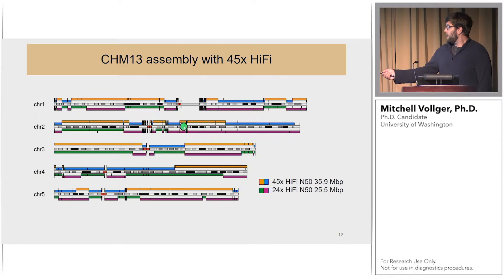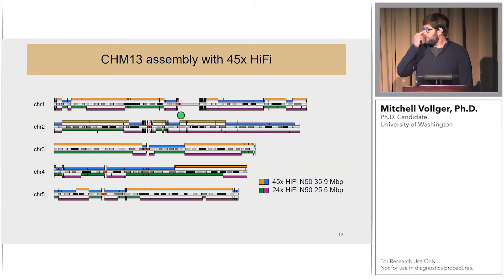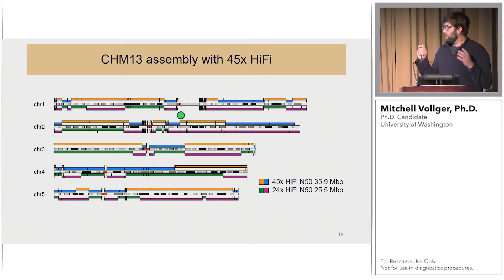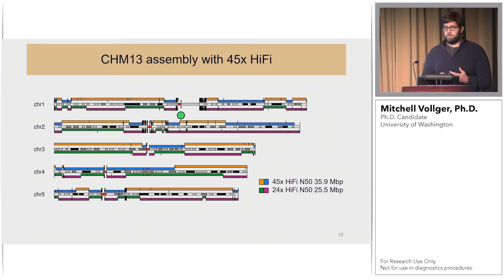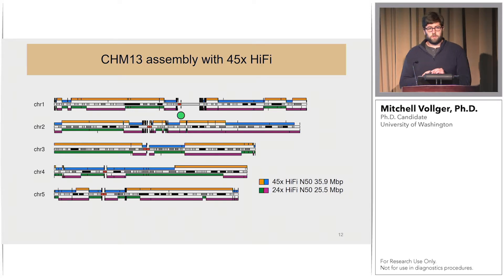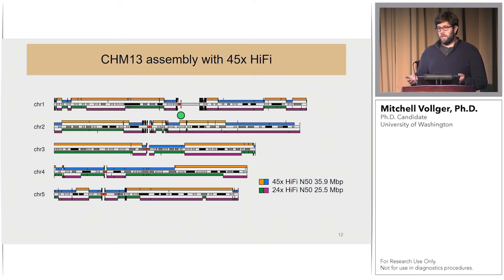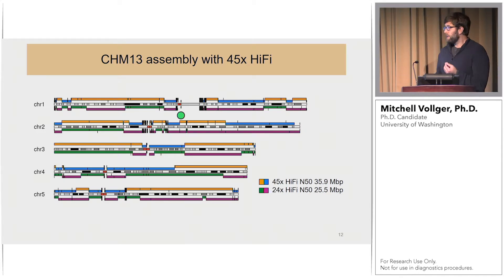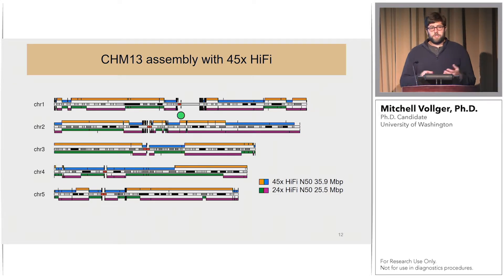Here I'm comparing the 45x HiFi assembly on top to the 24x HiFi assembly on the bottom. The new assembly is significantly more contiguous — the N50 goes up by nearly 11 megabase pairs to 36 megabases. Interestingly, SD resolution between the two is virtually identical; the additional coverage mainly helps in regions where coverage dropped out and the assembler lacked sufficient data. This makes 24x HiFi assemblies great candidates for scaffolding, since many joins can be made in simple regions.